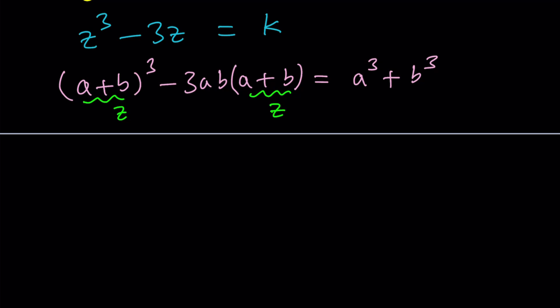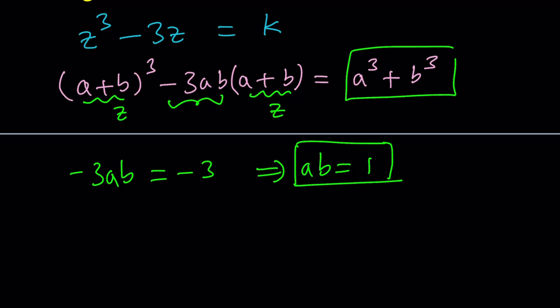Now, if you compare these two equations, you're going to notice that the coefficient of z in the first equation is negative 3. In the second equation, it's negative 3ab. So negative 3ab is equal to negative 3, which implies ab is equal to 1. So that's one of the equations that we're going to need to find a and b. And we do need another equation, and that's going to come from here. a cubed plus b cubed equals k.